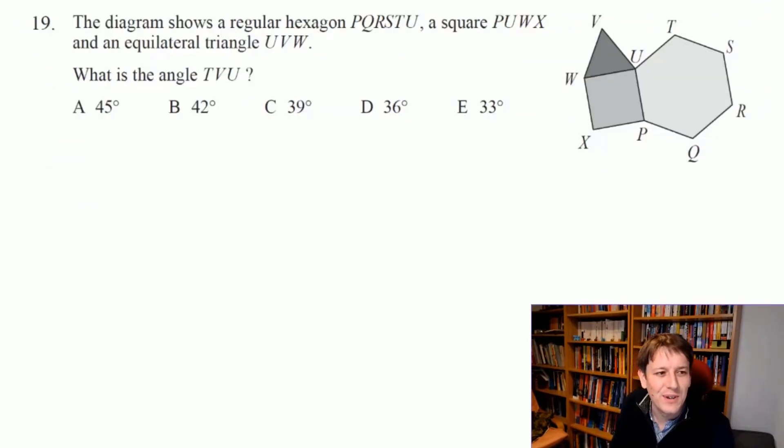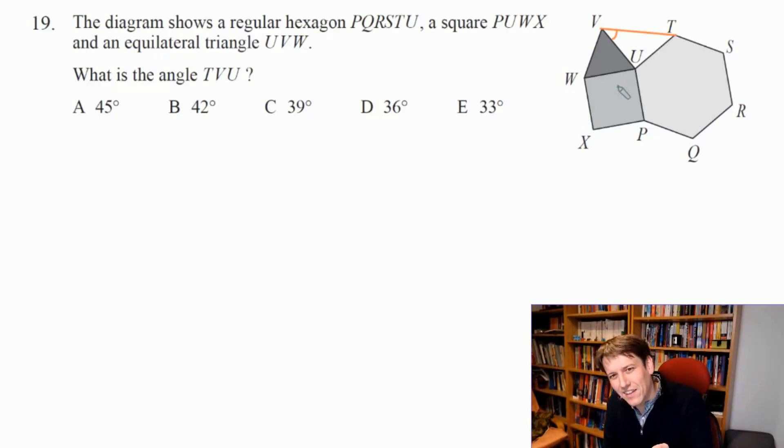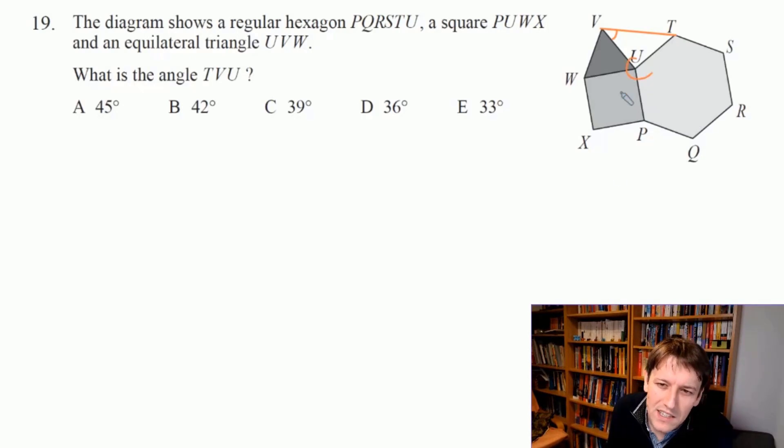So this question is not too bad if you know your interior and exterior angles stuff, but you do have to not get distracted. The question asks for angle TVU, which is this one that looks a bit hard to work out. So I can't really go directly at that. But the things I know here, I'm drawn immediately to this point here when I look at this question. We know that in a square here, we're going to have right angles and we know that we've got a 60 degree angle in an equilateral triangle. So the only one we might want to think about a little bit is what we get inside a hexagon. The exterior angle for a hexagon, in a regular hexagon here is 360 over 6, which is 60.